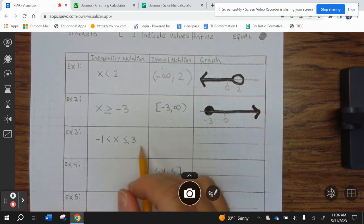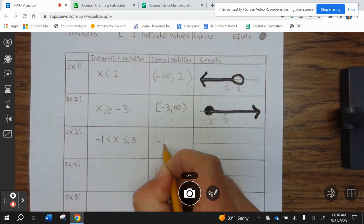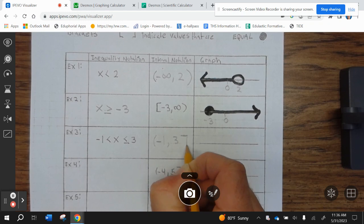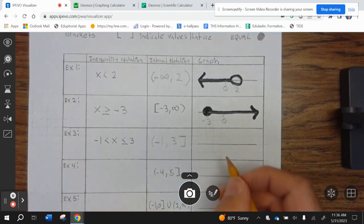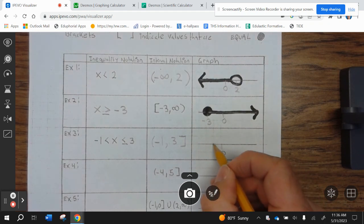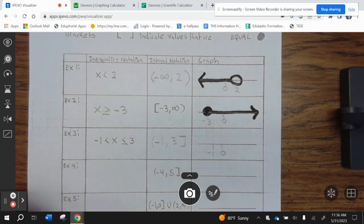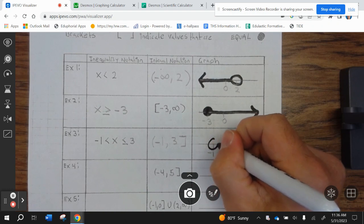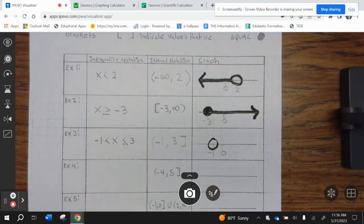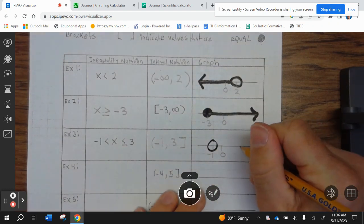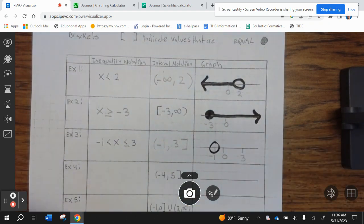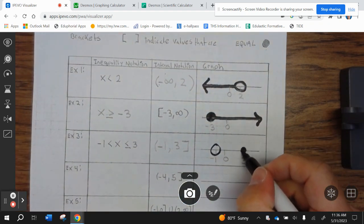All right. Now, what this means is parentheses, negative 1 to 3 bracket. Now, we're going to put 0. That means negative 1 right here, open circle. And then 3 right here, close circle.